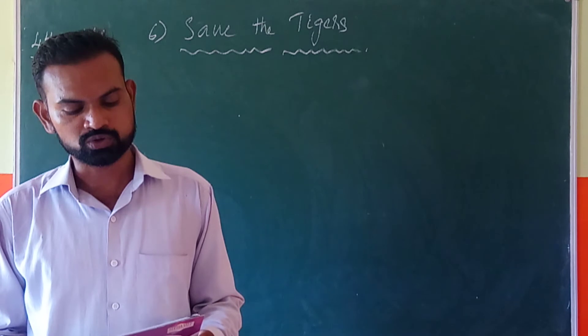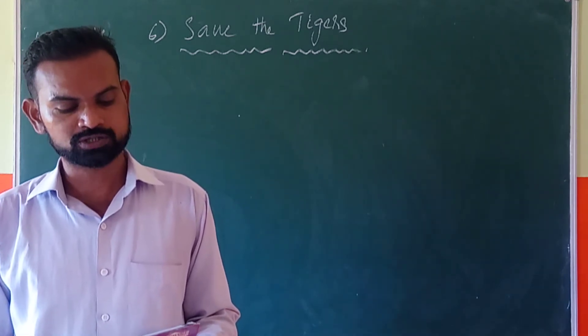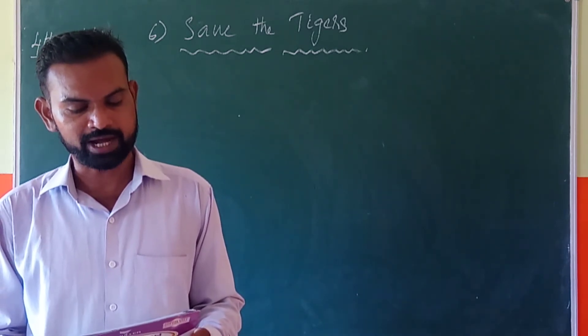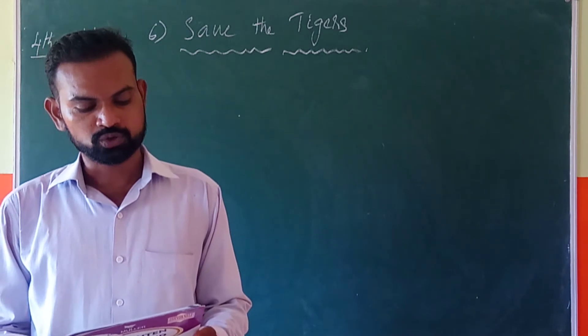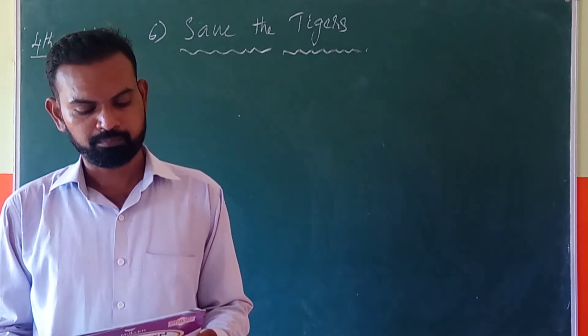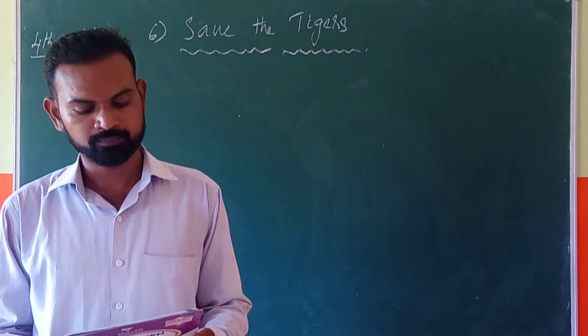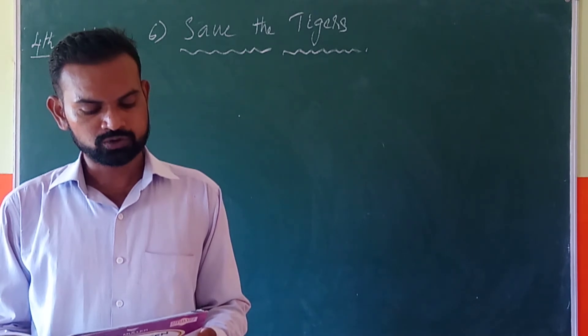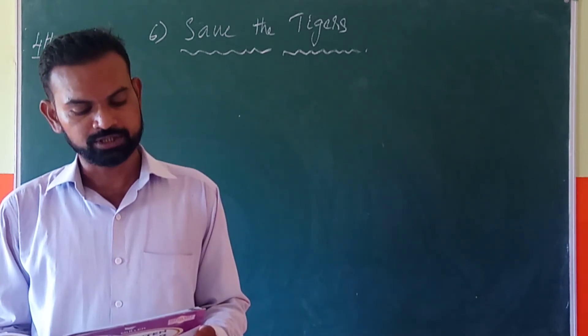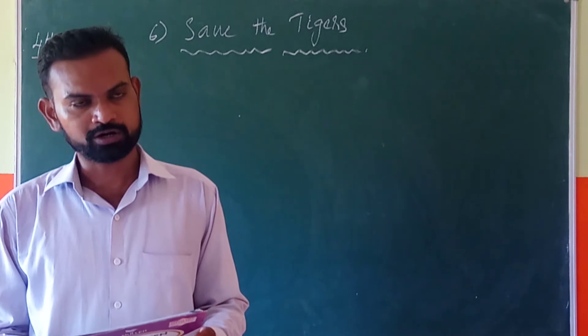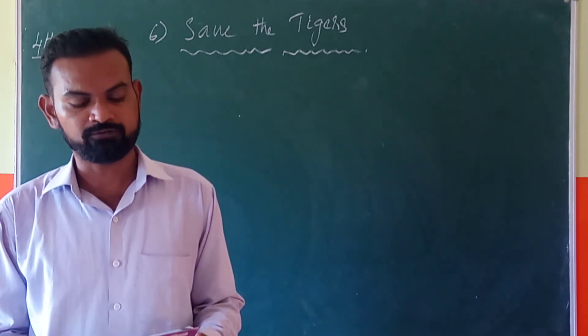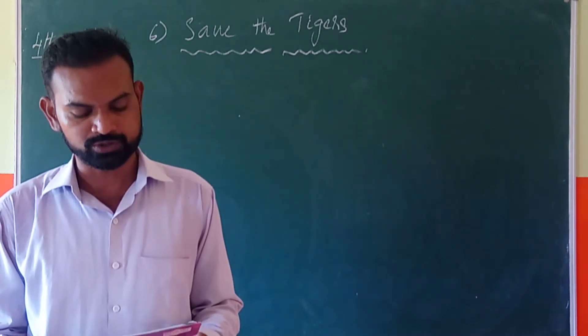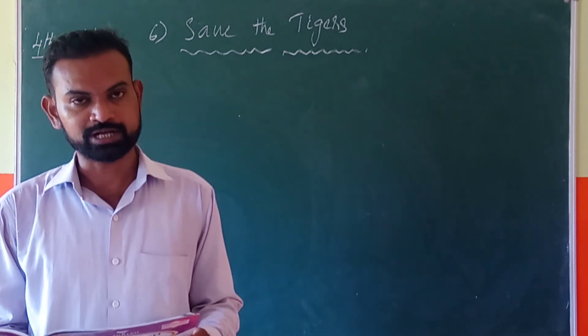They dislike the hot sun. They love the cool shade of the forest trees. They sleep by day and hunt by night. They do not hunt in packs. They love to hunt alone. They like to eat in a quiet place. So, they drag their food to a corner. After eating, they go to pool or river for water. They run very fast. They can swim also. They are not good at climbing trees. But tigers can jump to great heights.